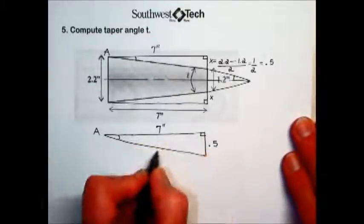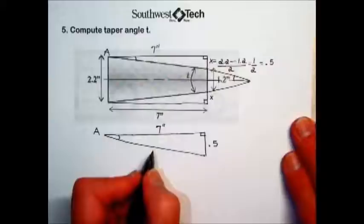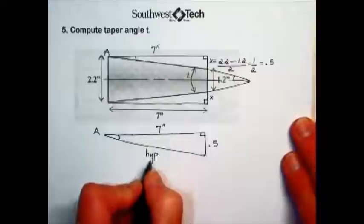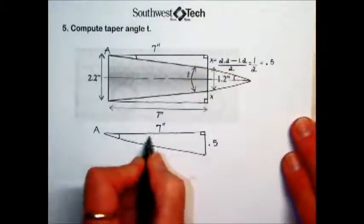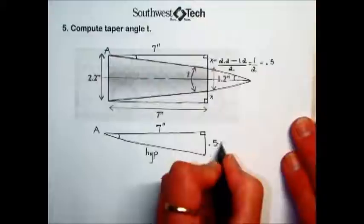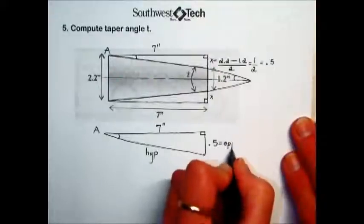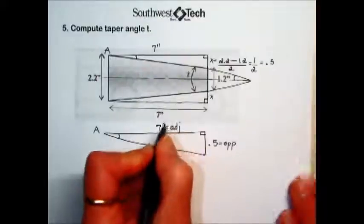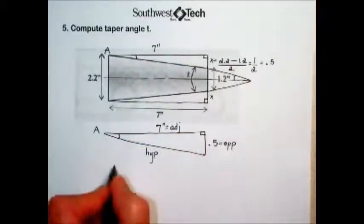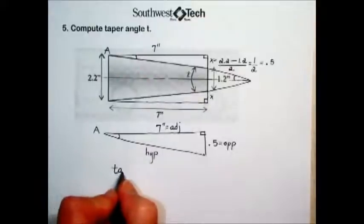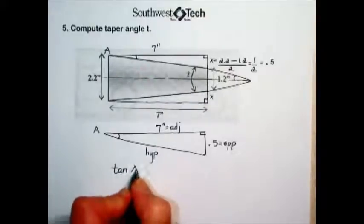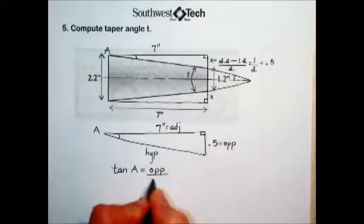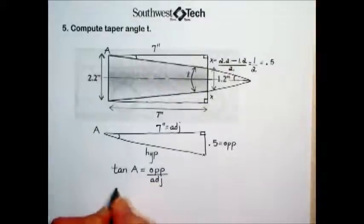Labeling the sides will help us determine which trig formula to use. Always starting with the side opposite the right angle, which is the hypotenuse. Through the triangle from our reference angle, we'll label the opposite. And the third side is the adjacent side. Since we're dealing with adjacent and opposite, we will use the tangent formula.